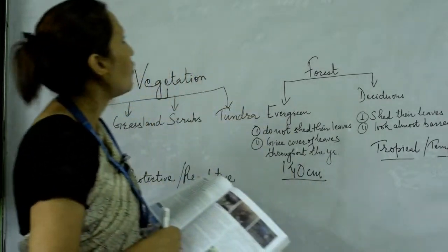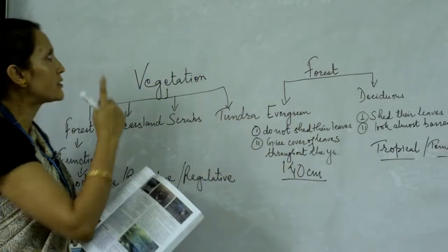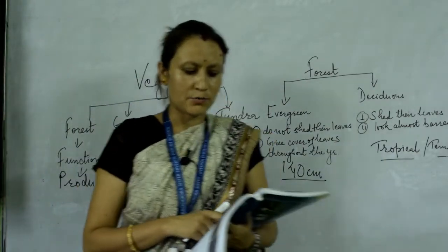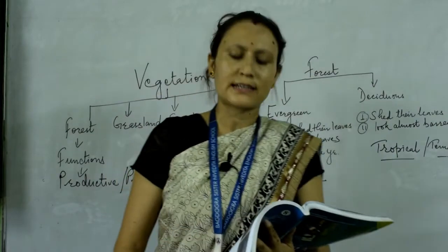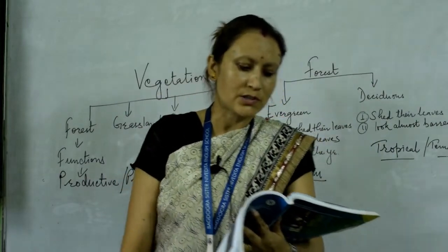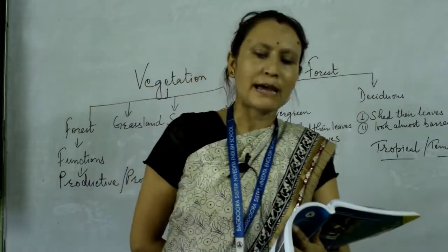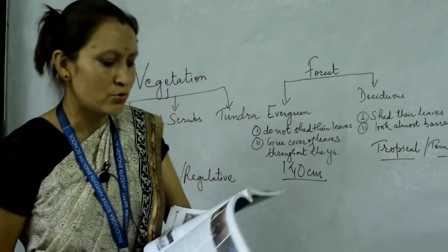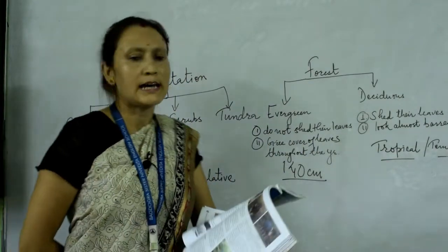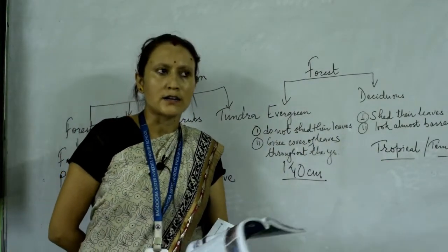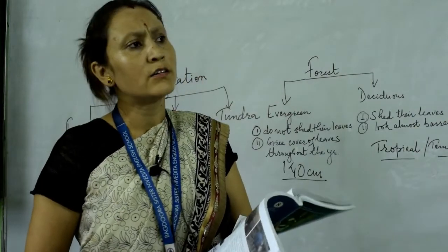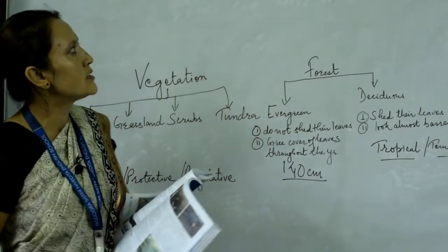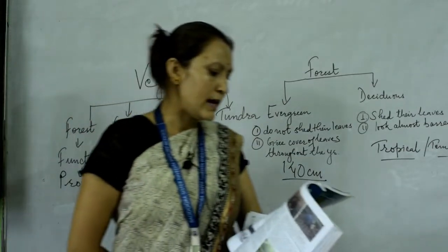Next topic is wildlife. Wildlife is related to natural vegetations. Domesticated animal species are used by humans for their livelihood, while wildlife consists of those animals which are not being used for direct human benefits. So these animals, which are not used by humans directly, are called wildlife.